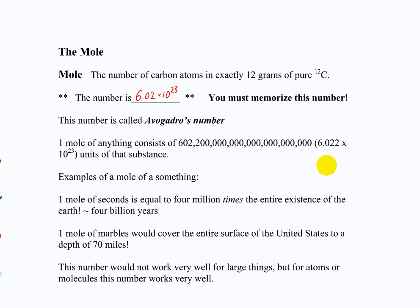To give you a sense of the size of that number, just a couple of examples. A mole of seconds is 4 billion years — 4 million times the entire existence of the Earth. A mole of marbles would cover the entire surface of the country to a depth of 70 miles up. So anything with tangible mass or time creates an unimaginably huge number of things. But when we're talking about something almost unimaginably tiny, like an atom, this number is actually kind of useful.